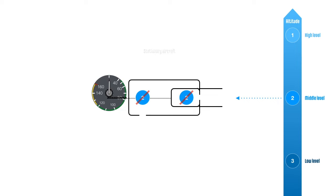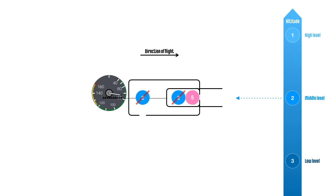For an aircraft in flight, the dynamic pressure expands the diaphragm as it enters through the pitot tube. Let's assume that dynamic pressure has a value of five units, which results in 100 knots of actual indicated airspeed.